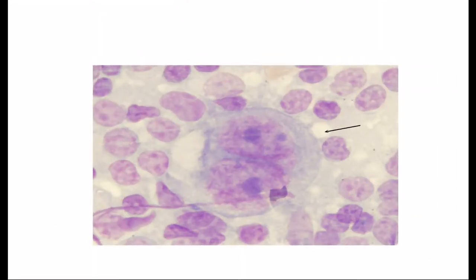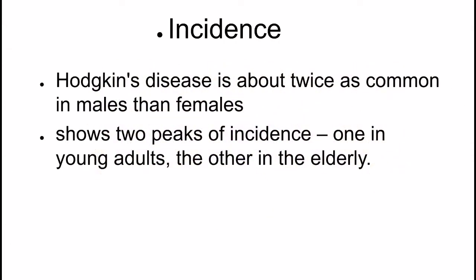This is a microscopic picture of Hodgkin's disease. Incidence: Hodgkin's disease is about twice as common in males than females. It shows two peaks of incidence — one in young adults and the other in the elderly.